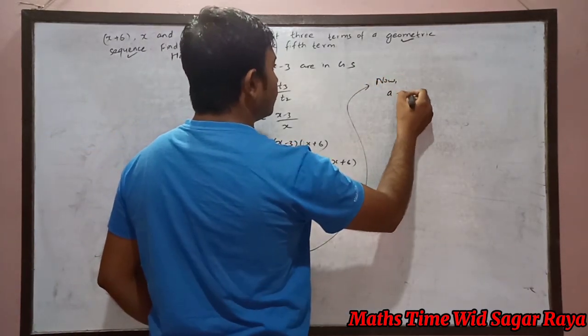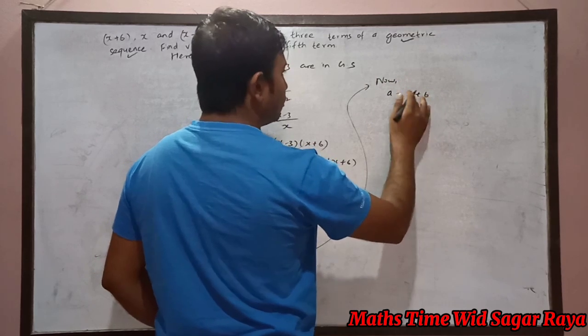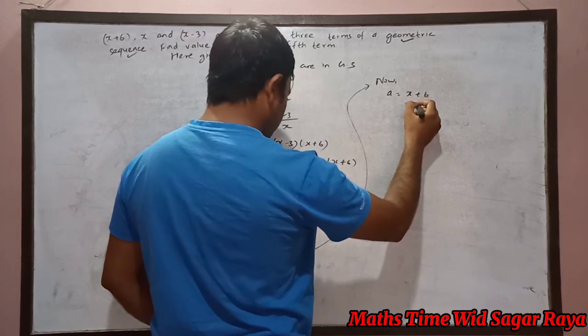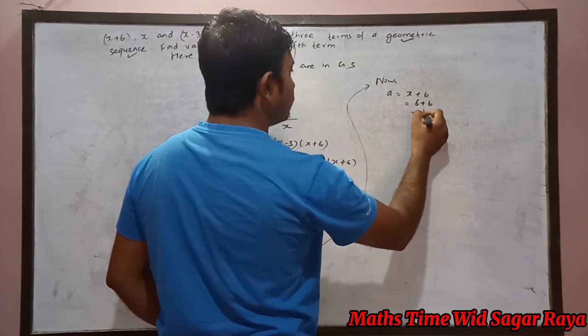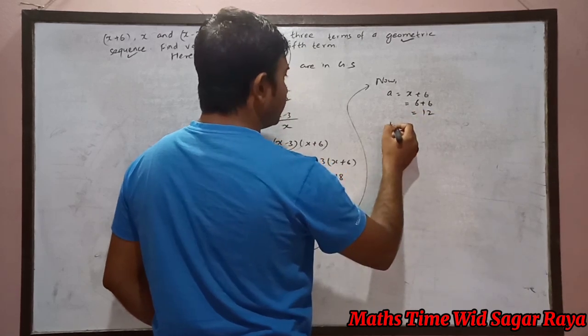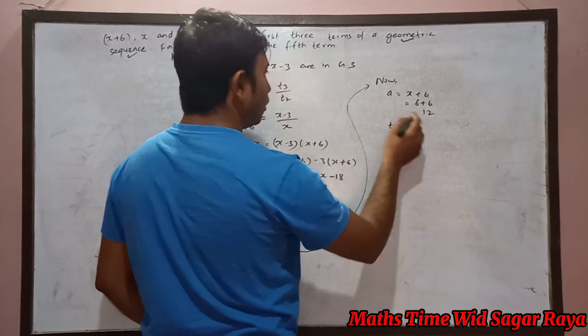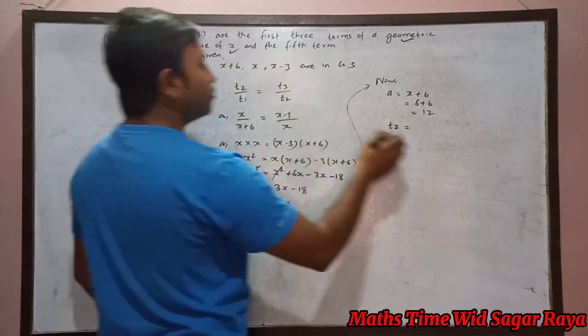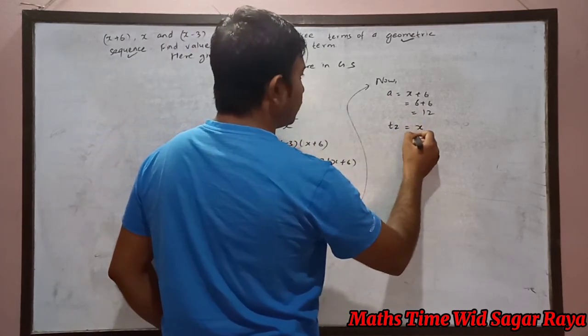Now first term equals x plus 6, so x plus 6 means 6 plus 6 equals 12. And second term equals x, so x means 6.